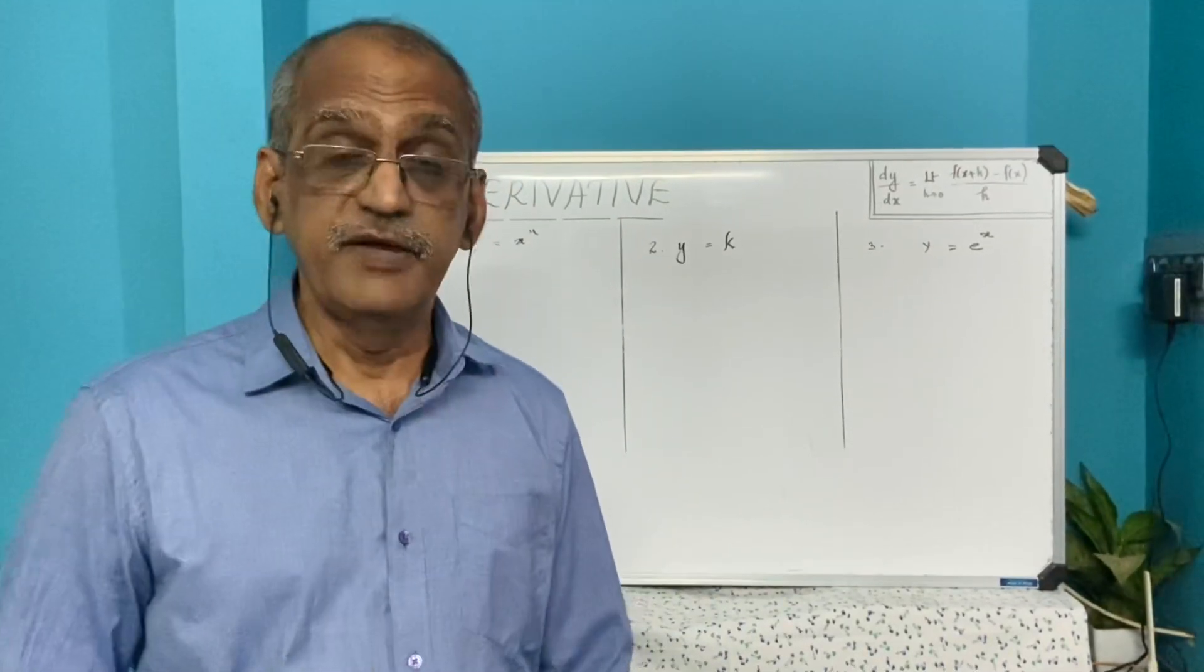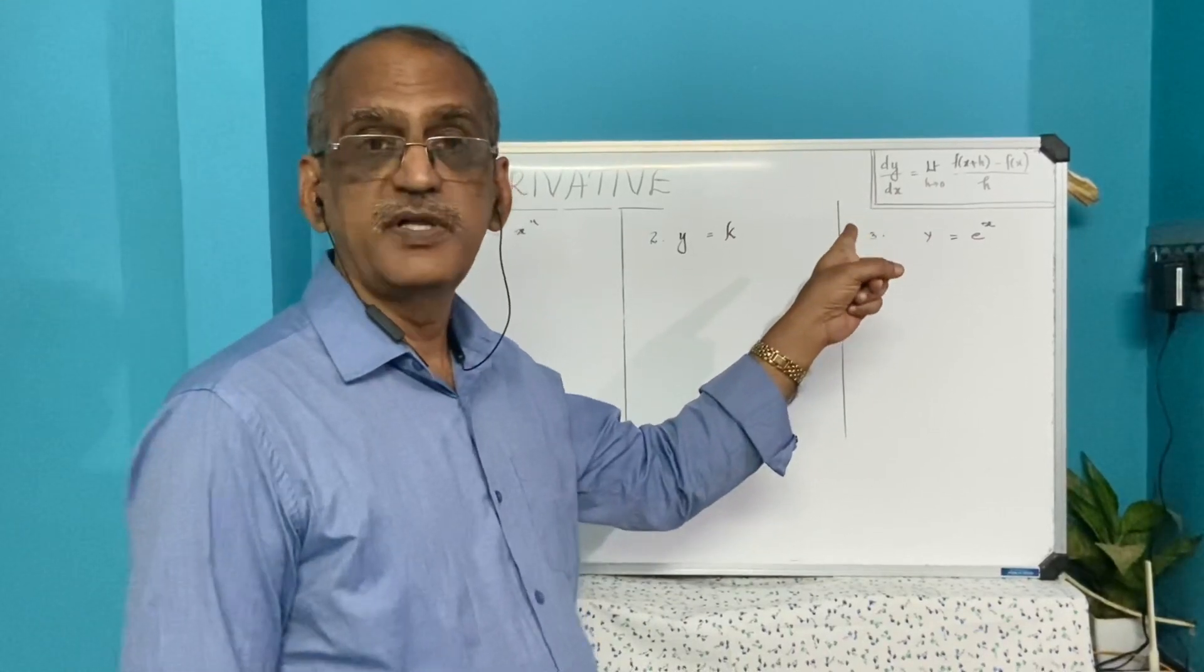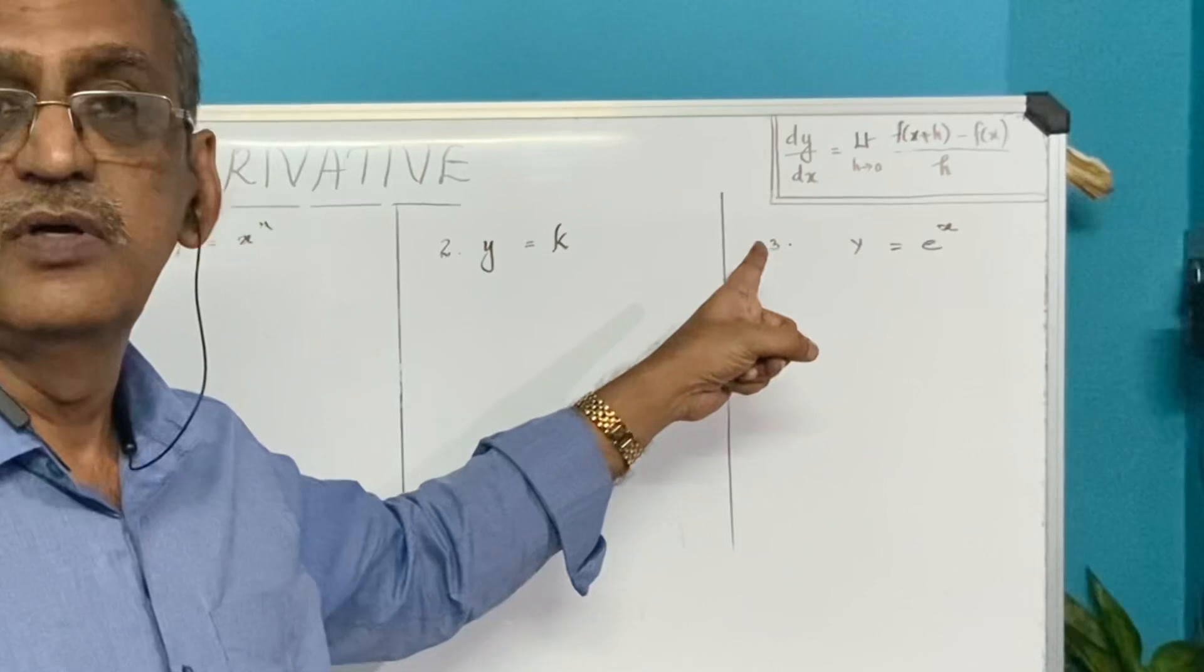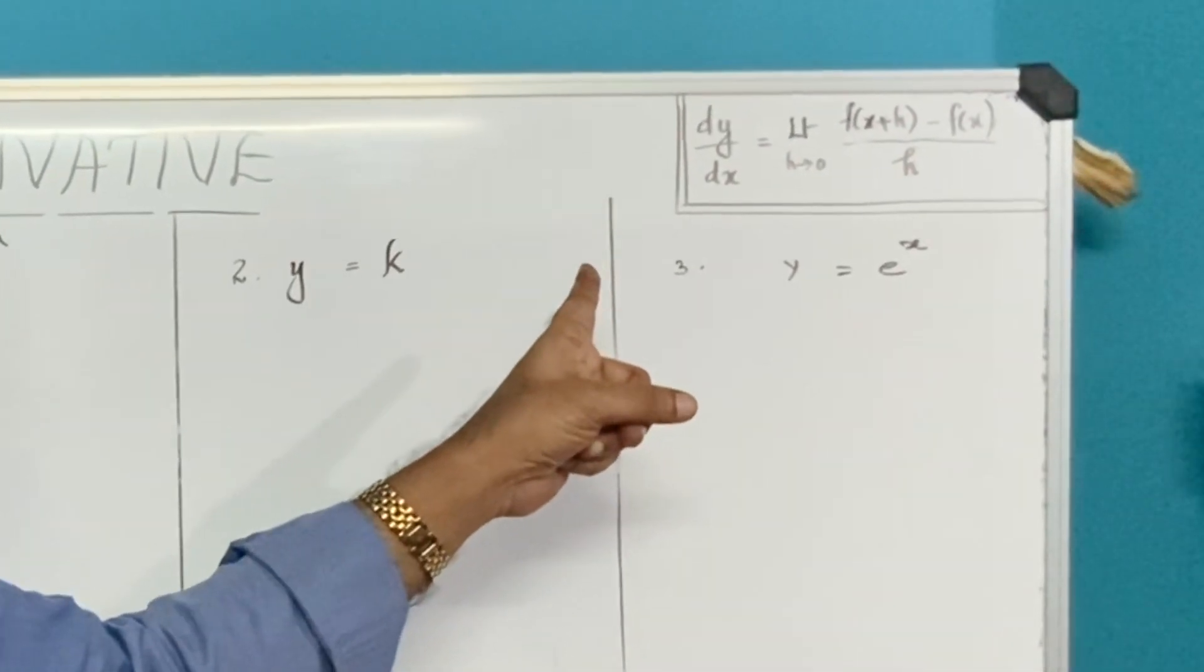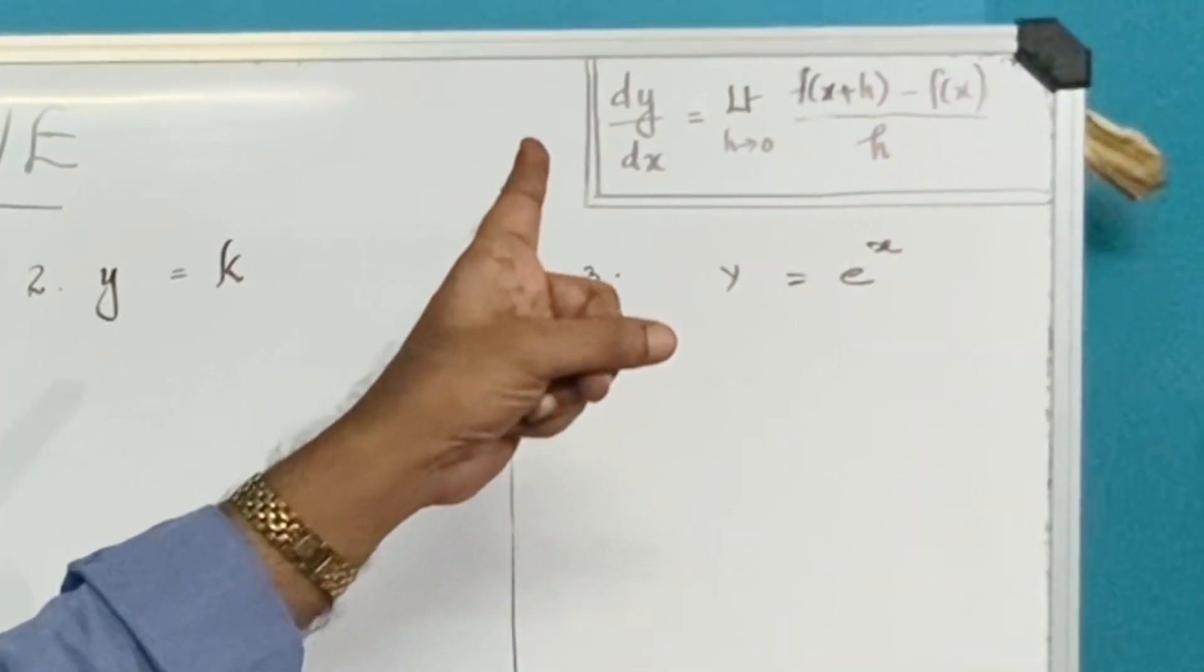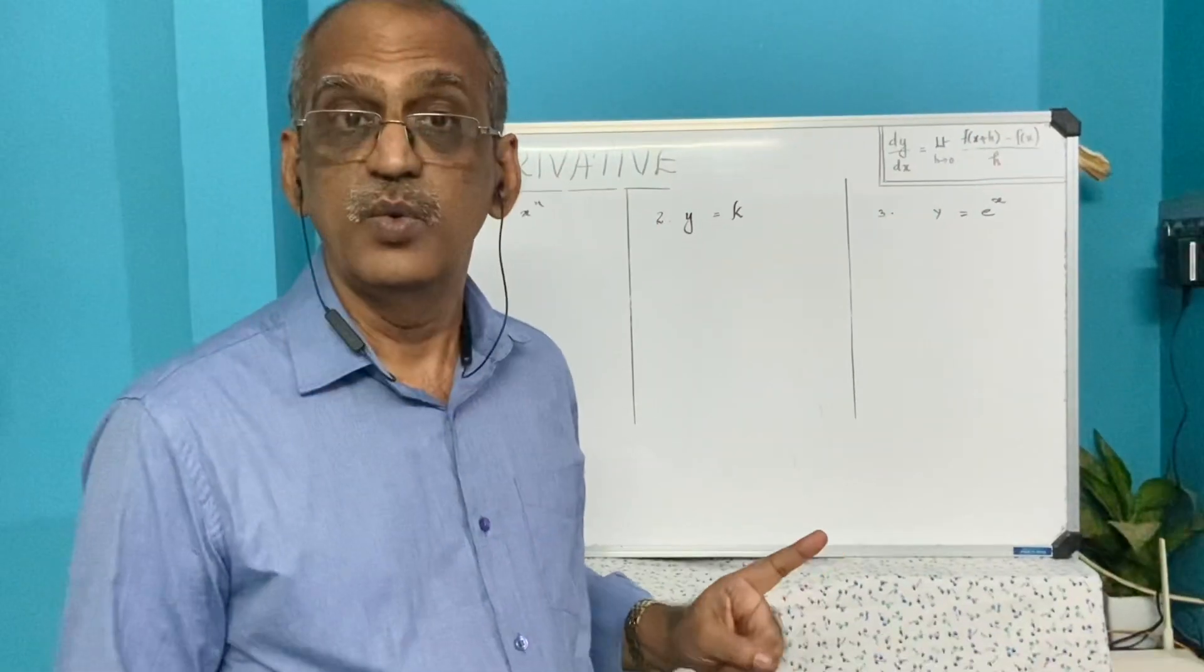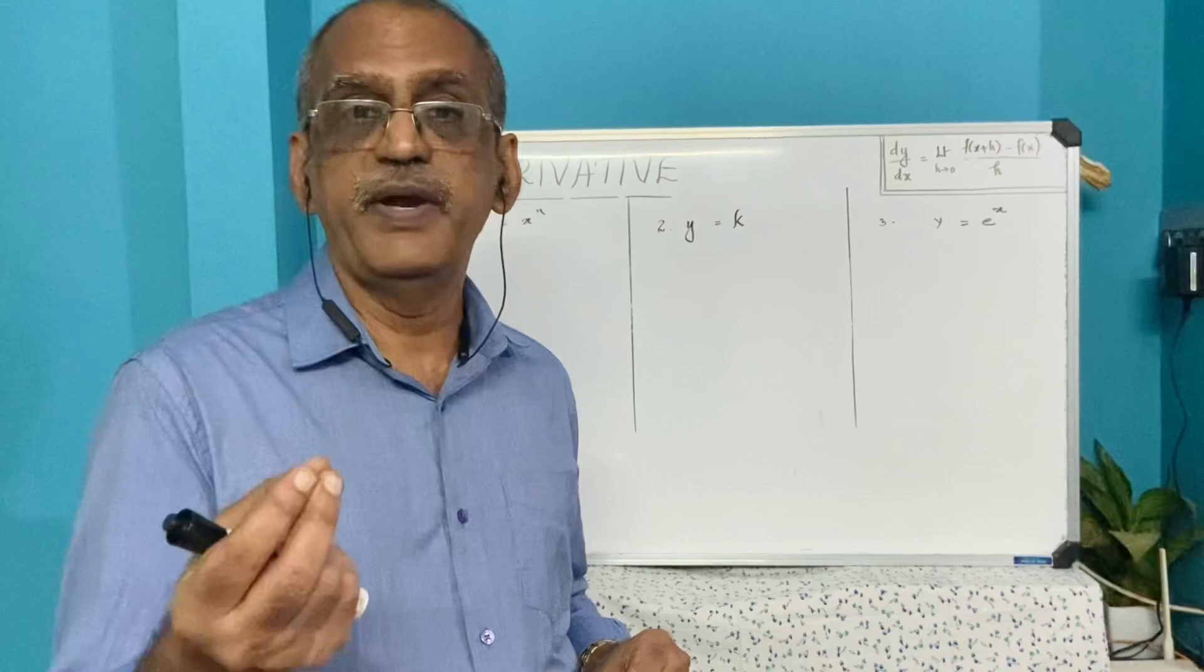Earlier you had studied that the first derivative of a function using first principle: dy/dx is equal to limit h tends to 0 of f(x+h) minus f(x) by h, where h is a small increment in x.